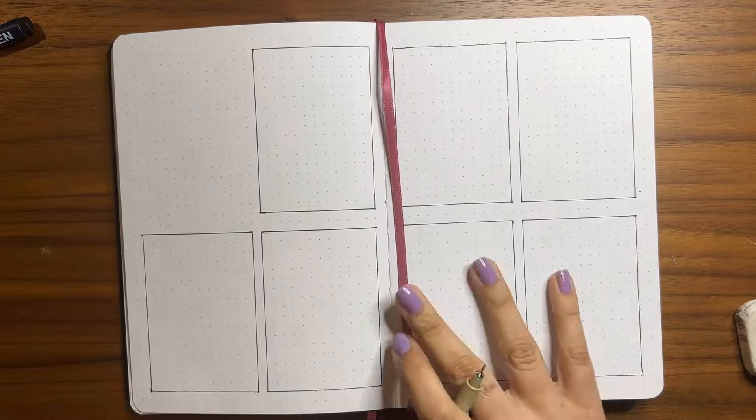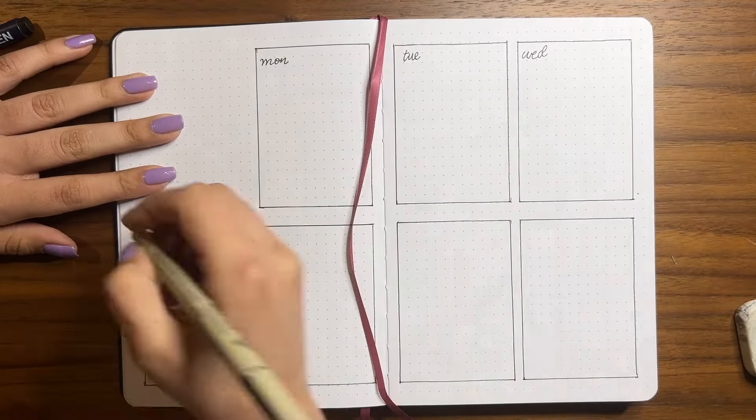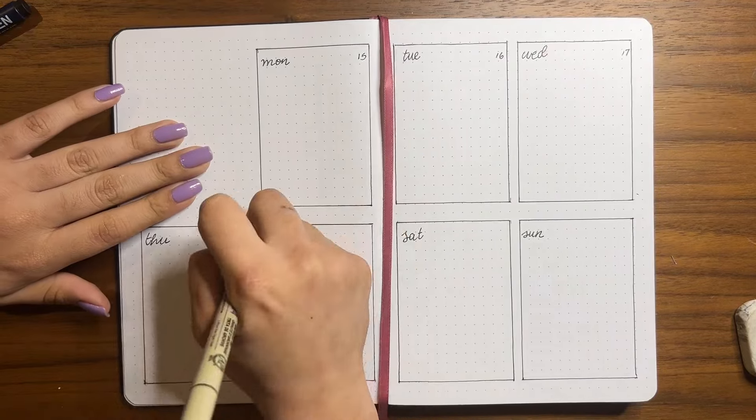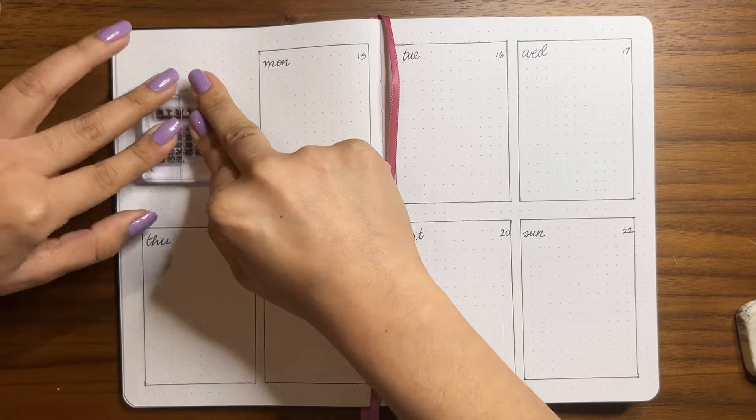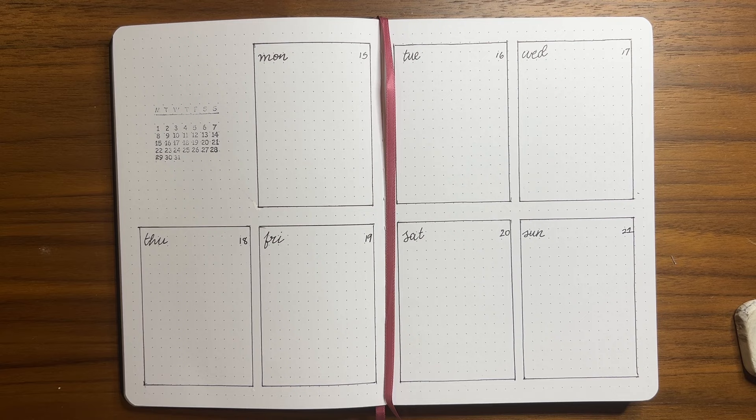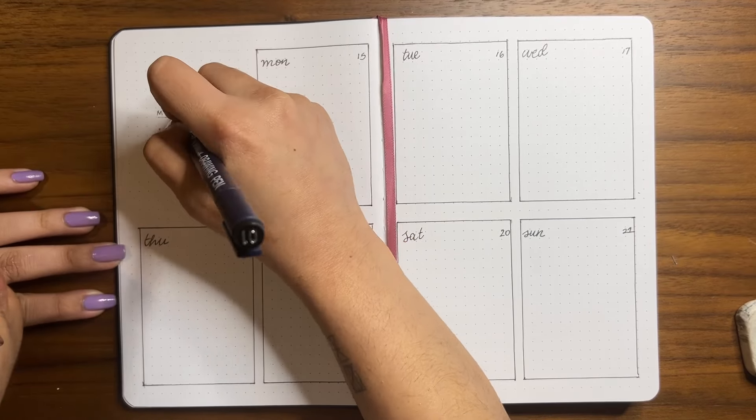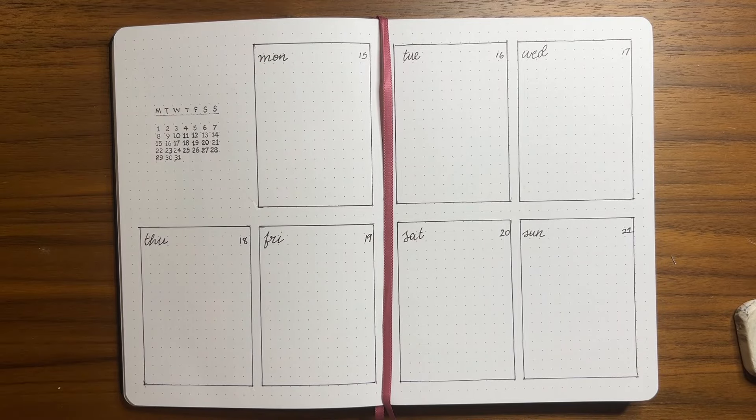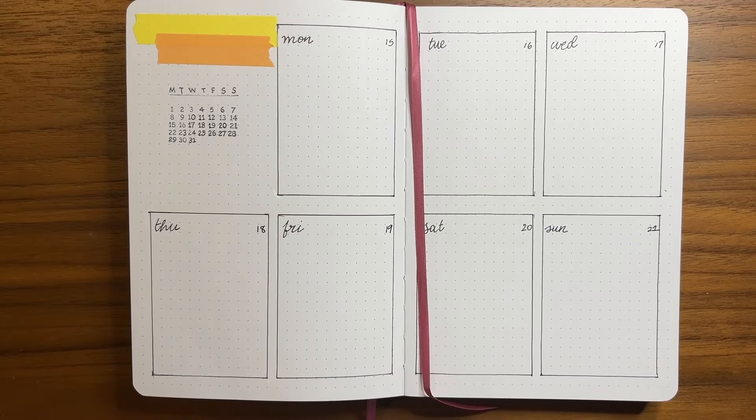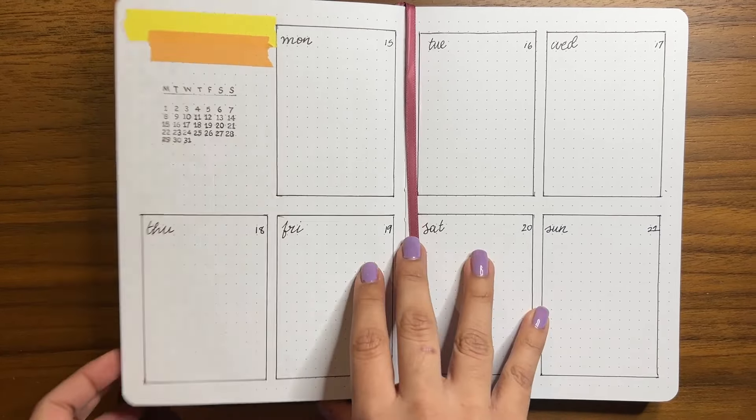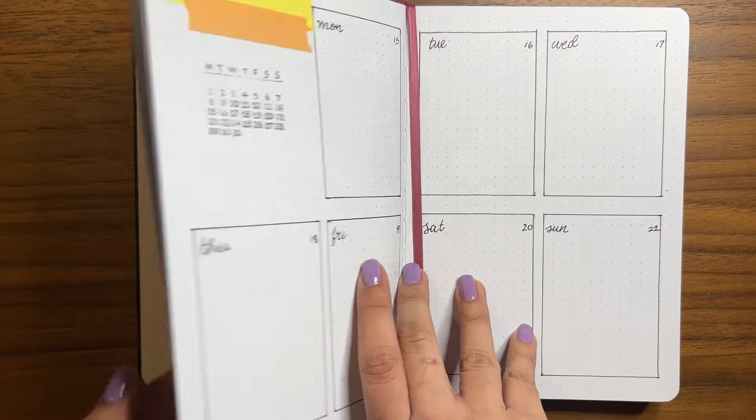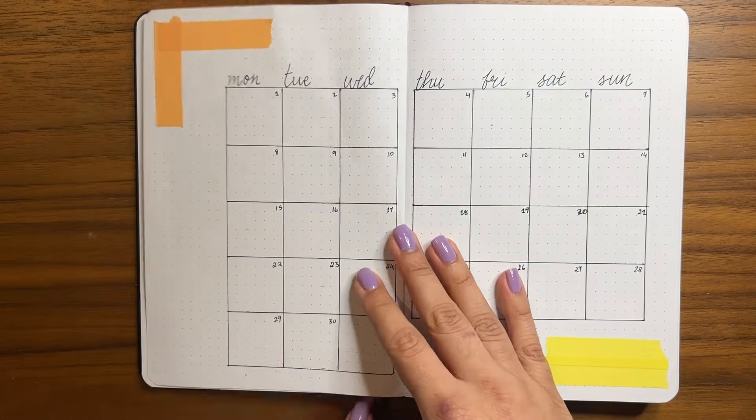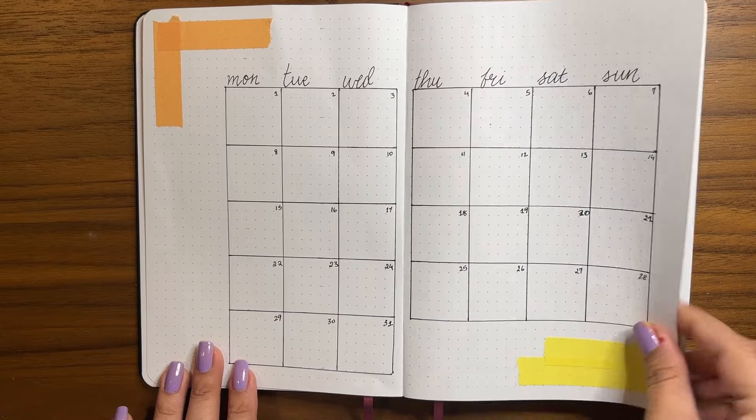And that's the last spread of January, which is the setup for the first week. Or I think this one was like the second week or something. It was not the first week. And this is going up in the first week of February. And as you can see, I've added some washi tape. And this is the final flip through. I did the drawing just with some pens and some straight lines, honestly. Like I said, I wasn't really feeling too confident, and so I didn't even put in too much effort. That's it. Hope you guys liked it.